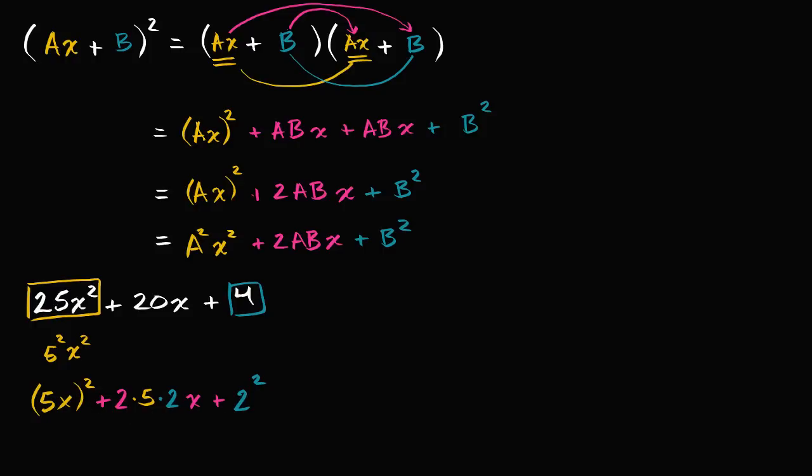So if you wanted to factor this, you could say, well this is just going to be the same thing. Since we know what A and B are, this is going to be 5x plus 2, whole thing squared. So the whole point of doing this is to start recognizing when we actually have perfect squares, especially perfect squares where the leading coefficient isn't one.